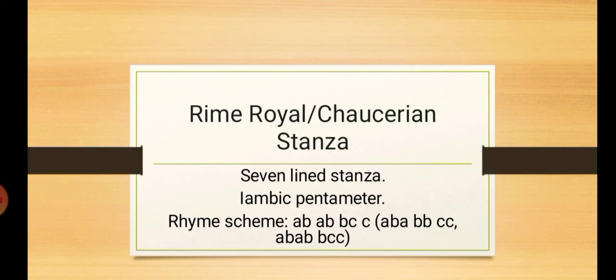It is a seven-line stanza written in iambic pentameter, the most common form of metrical pattern. Seven lines and there can be three variations of the rhyme scheme. It can be ABABBCC or ABABBBC or ABABCCB. In any form, this stanza can be written in all these three forms.